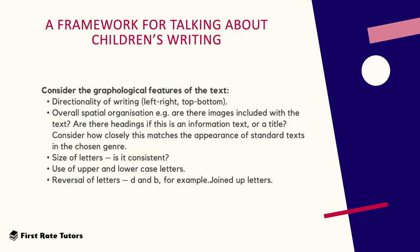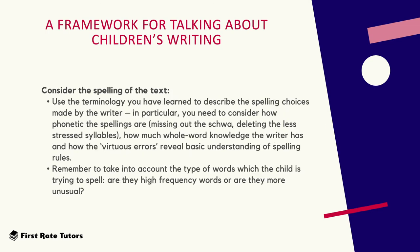When examining a child's piece of writing, also consider graphological features. Look at the directionality of the writing — does it go from left to right, top to bottom? Look at the overall spatial organisation — are images included with the text? Are there headings if it's an information text or title? Consider how closely this matches the appearance of standard text in the chosen genre. Also consider the size of letters — are they consistent? Are they able to use upper and lowercase letters? Look for reversal of letters such as D and B, as well as joined up cursive writing.